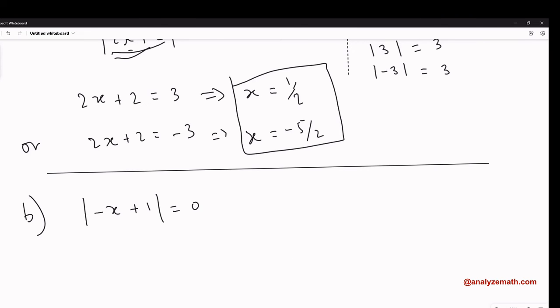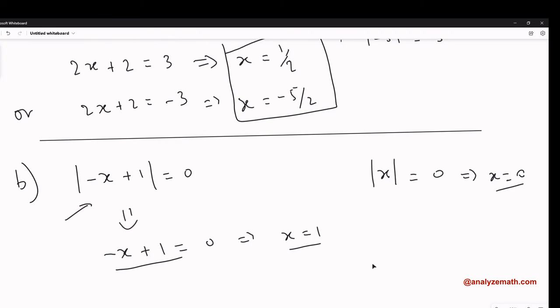Let's go to part B: an equation with an absolute value equal to zero. This is simple because if the absolute value of x equals 0, then x equals 0. Here we have |-x + 1| = 0, so -x + 1 = 0, which gives x = 1. You can easily substitute x = 1 into the given equation to verify it's a solution.